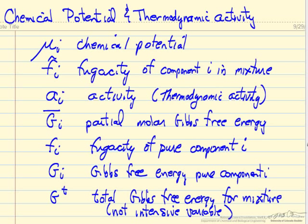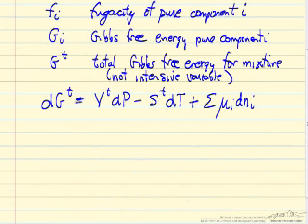We are going to look at how these relate and where the term activity comes from. Chemical potential is defined in terms of Gibbs free energy. Then fugacity is used typically instead of chemical potential because it is an easier variable to work with and perhaps a little more physically meaningful. Activity is a reduced fugacity, and this relation will be shown during the rest of this video.